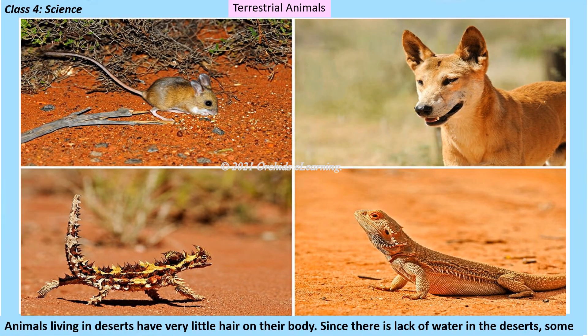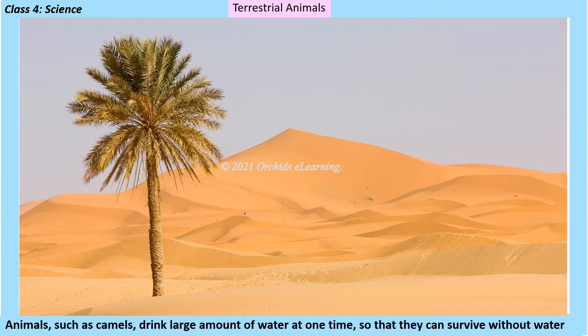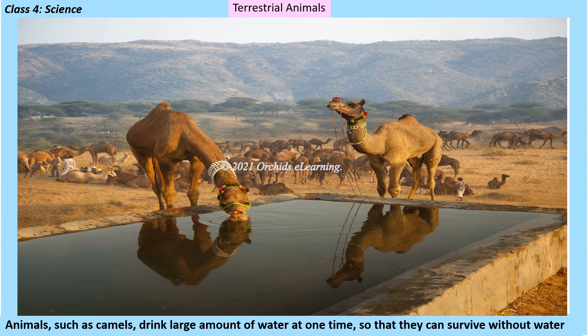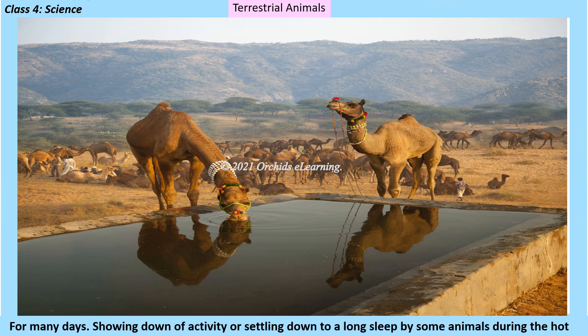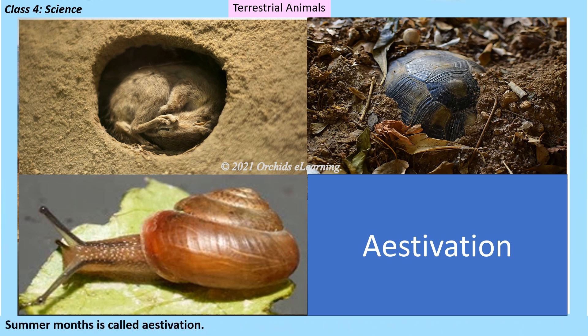Animals living in deserts have very little hair on their body. Since there is a lack of water in the deserts, some animals such as camels drink a large amount of water at one time so that they can survive without water for many days. Slowing down of activity or settling into a long sleep during hot summer months is called estivation.